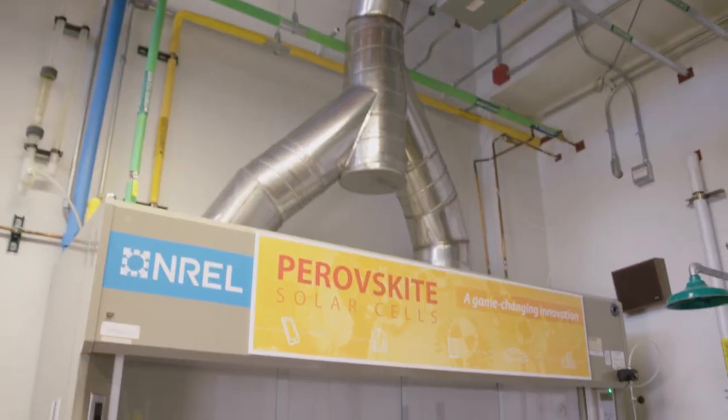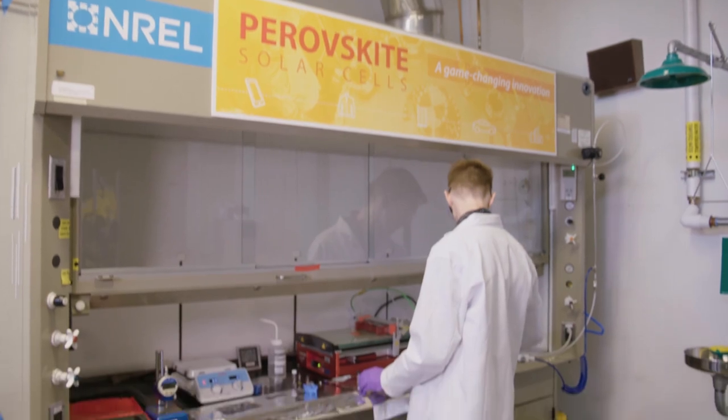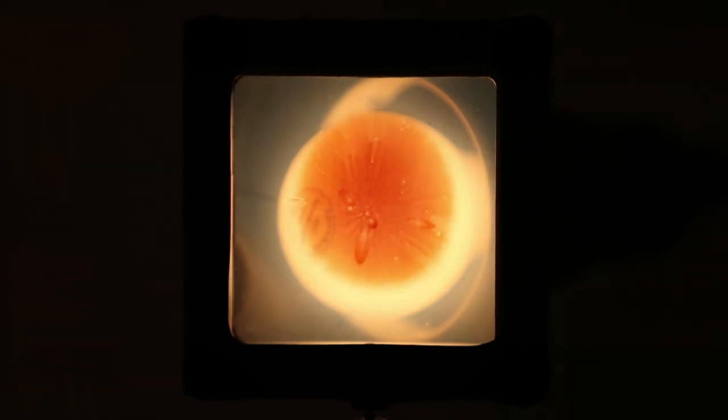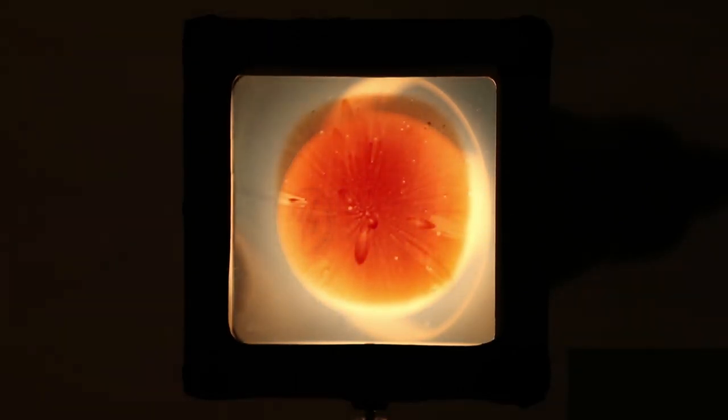Using perovskite technology, Switchglaze reacts to the conditions outside, remaining transparent on cool, cloudy days, transforming into a heat-blocking, energy-generating solar cell on bright, sunny days.